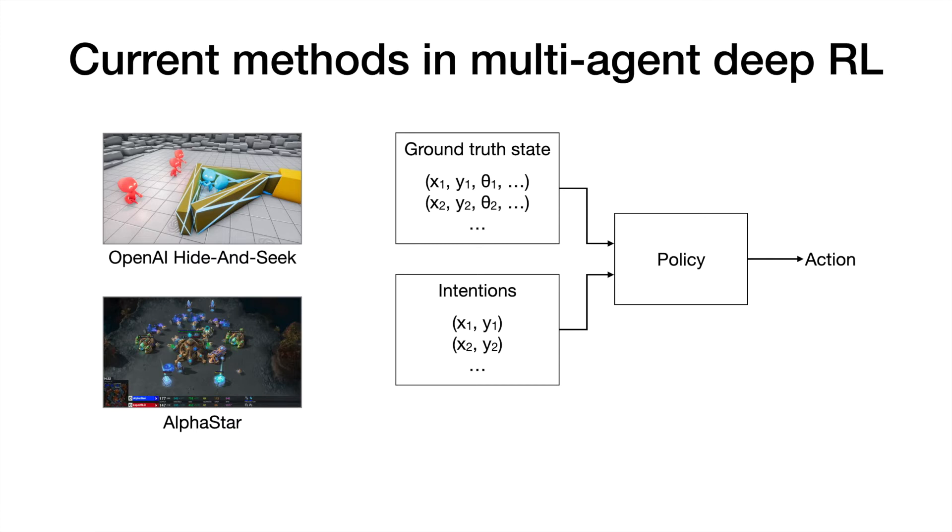However, these methods typically require massive amounts of data to train, and are often limited to simulation environments where ground truth state information is available. But what if we don't have access to the ground truth state, and instead want to train agents directly on visual observations?